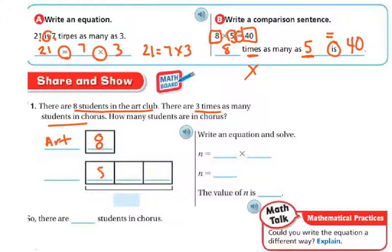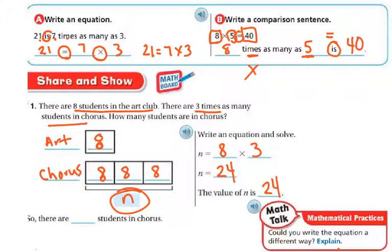Then it says there are 3 times as many students in the chorus. So that means there's 1, 2, 3 of the 8's, because it says the chorus has 3 times as many. And if there's 8 and 1, then you've got to have the 3. What we don't know is what that equals up to be. So this is going to be my chorus. So we can write an equation, n equals 8 times 3. This is my n right here. So 8 times 3, or I can even count it, 8 plus 8 is 16. And then another 8 is going to be 24. So 8 times 3 is 24. So the value of n is 24. So there are 24 students in the chorus.